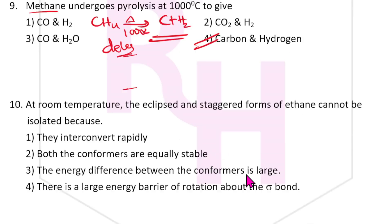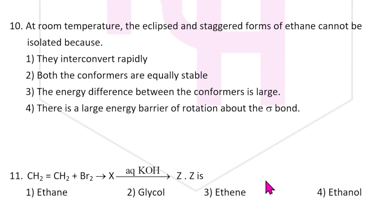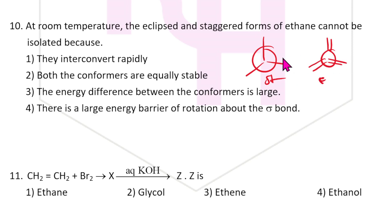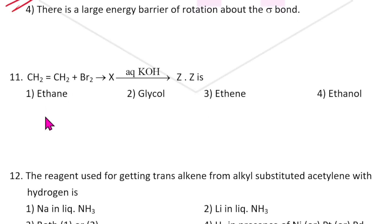At room temperature, the eclipsed and staggered forms of ethane cannot be isolated because they are interconvertible and rapidly interconvert. Eclipsed and staggered forms are difficult to separate from each other.